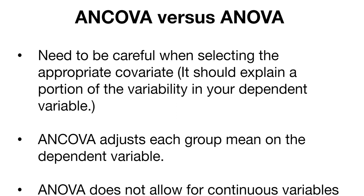This highlights key differences between ANOVA and ANCOVA. In R, it's important to ensure variables are appropriately stored as factors or numeric variables. You cannot add continuous variables in a standard ANOVA, but you can in ANCOVA. You need to carefully select the appropriate covariate — ideally one that explains a portion of the variability in the dependent variable. ANCOVA adjusts each group mean based on the covariate, which is the core difference from ANOVA.